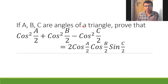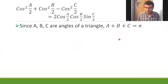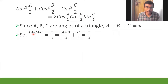Since a, b, c are angles of a triangle, the condition is a + b + c = π. Now observing that the question involves a/2, b/2, and c/2, I'm going to divide this equation by 2, so that I can use the condition conveniently. This gives a/2 + b/2 + c/2 = π/2.